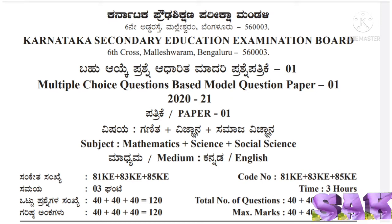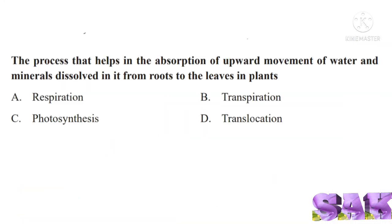Dear students, in this video let us solve KEEB biology model paper 1. First question from biology part: the process that helps in the absorption of upward movement of water and minerals dissolved in it from roots to the leaves in plants.